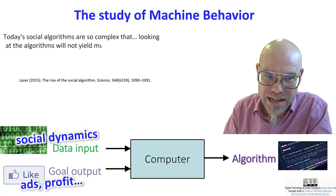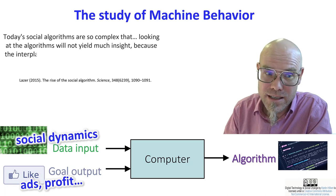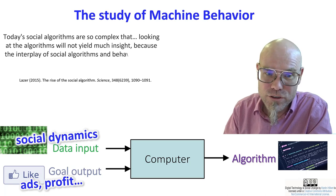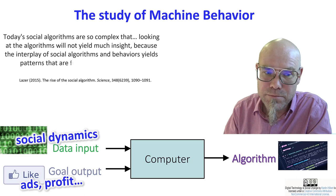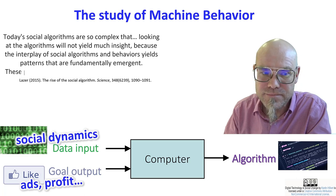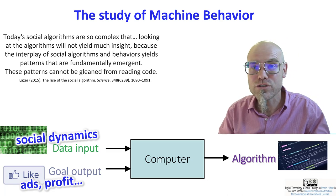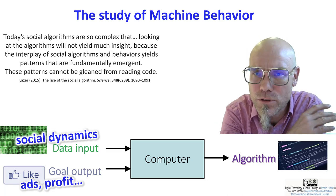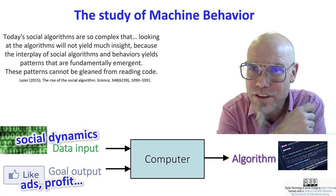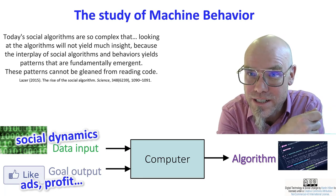To cite a recent study: today's social algorithms are so complex that looking at the algorithms will not yield much insight, because the interplay of social algorithms and behaviors yield patterns that are fundamentally emergent. These patterns cannot be gleaned from reading code. So even the people who write the code won't understand what the algorithm does.